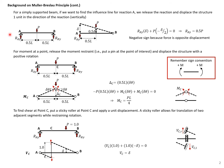If we're looking for the reaction at a point, say the reaction at point A, we need to release that reaction and displace the structure one unit upward in the direction of the reaction. We get a straight line for our influence line, and using that we can calculate the reaction at point A due to the load shown.